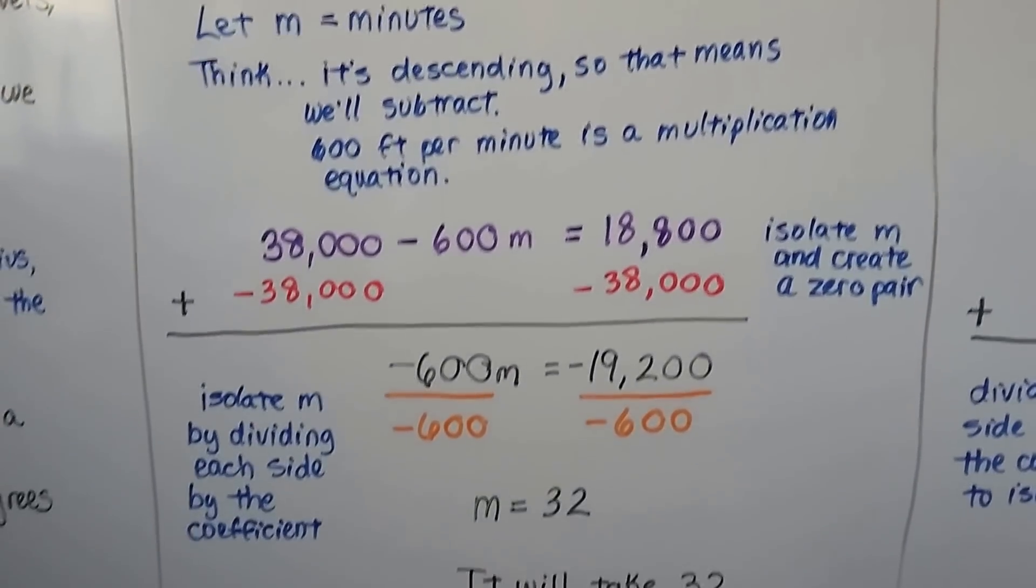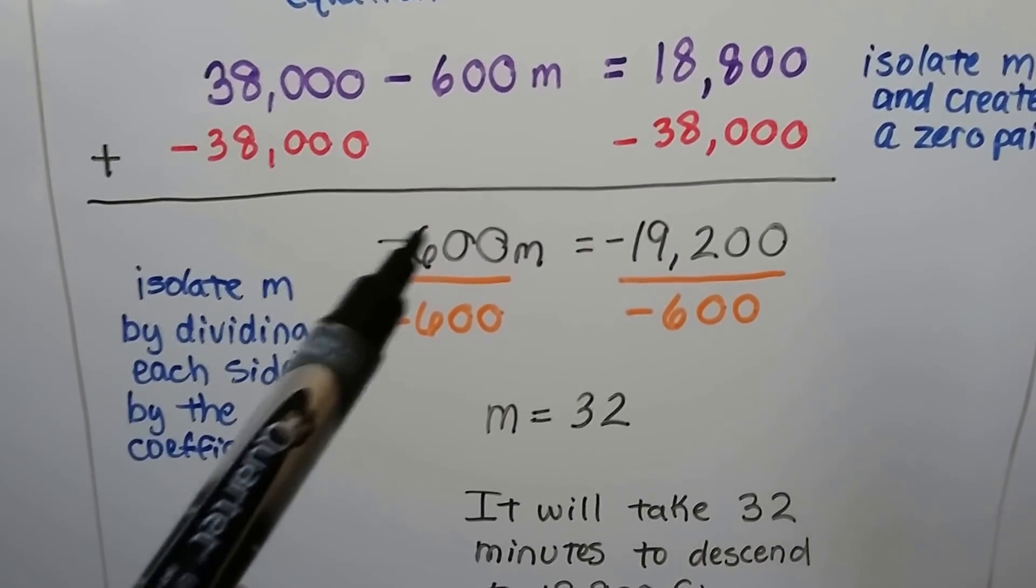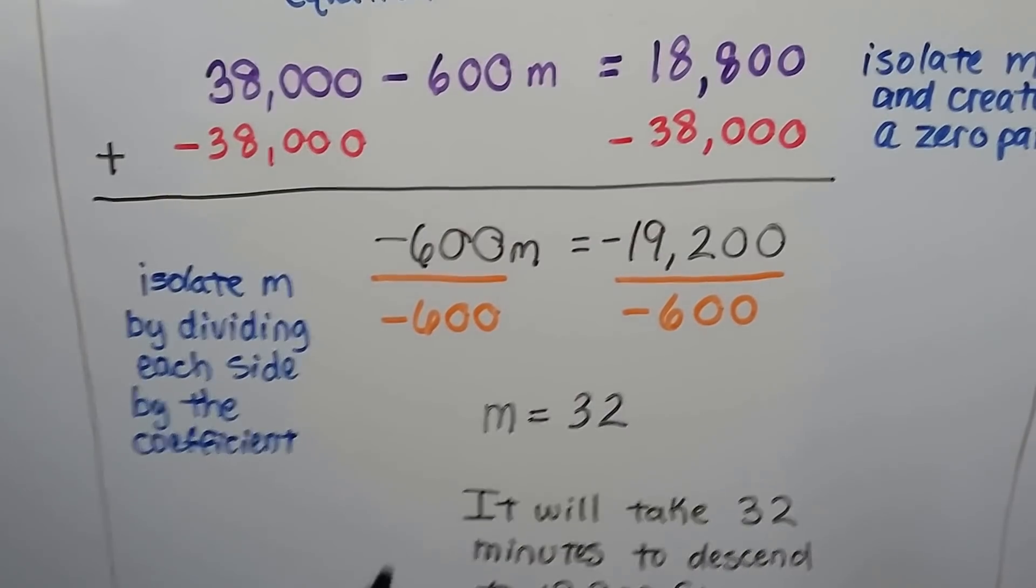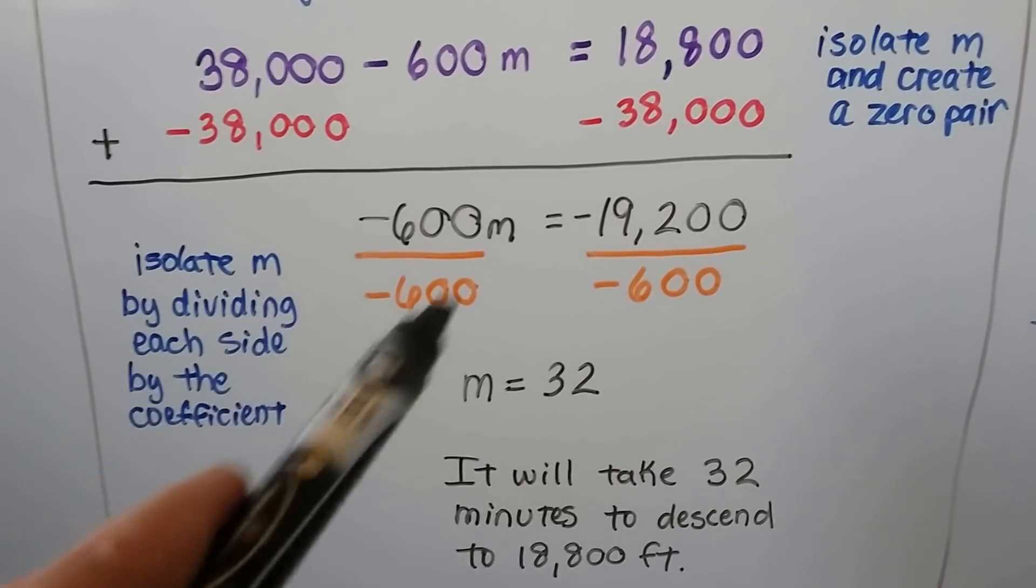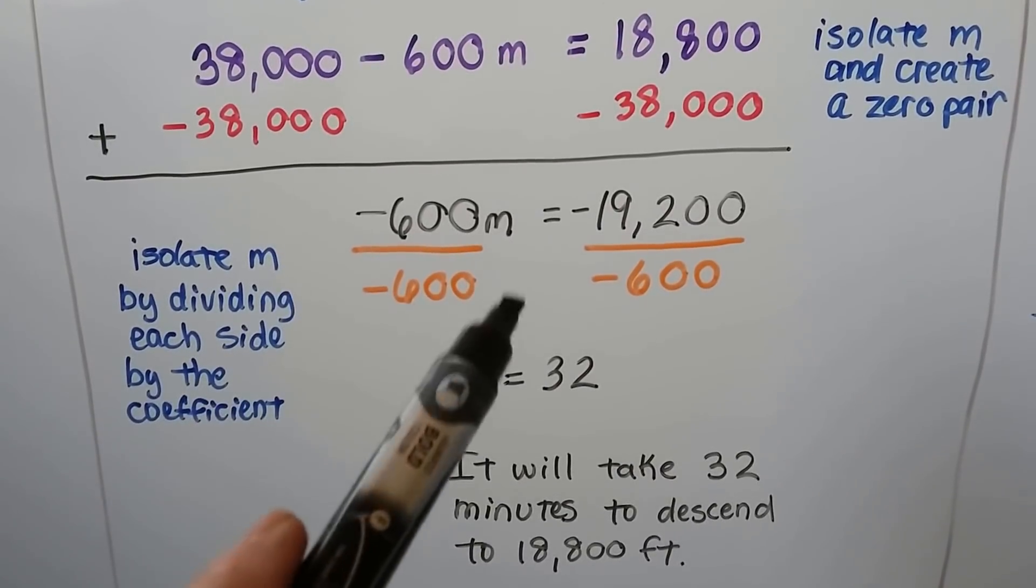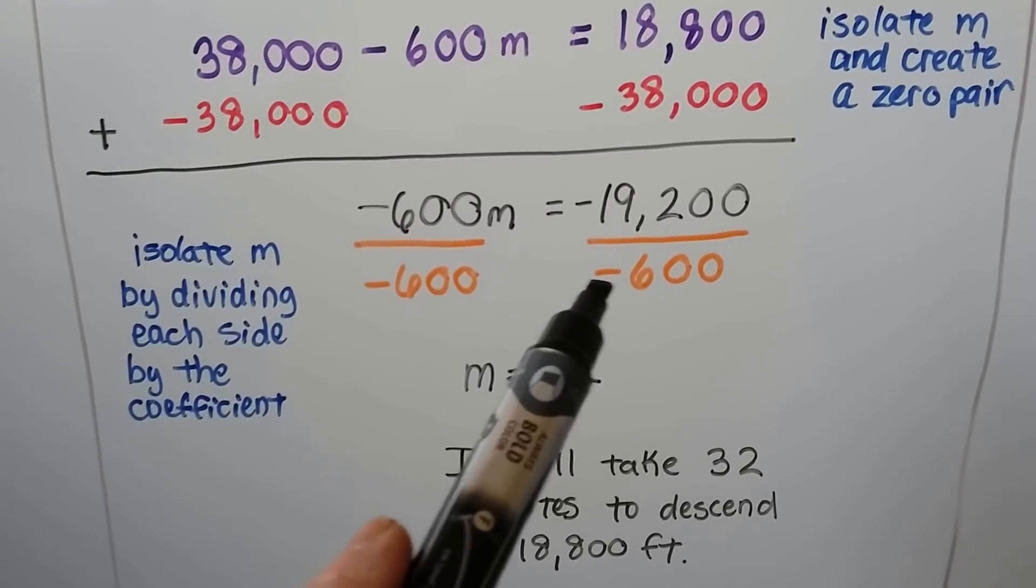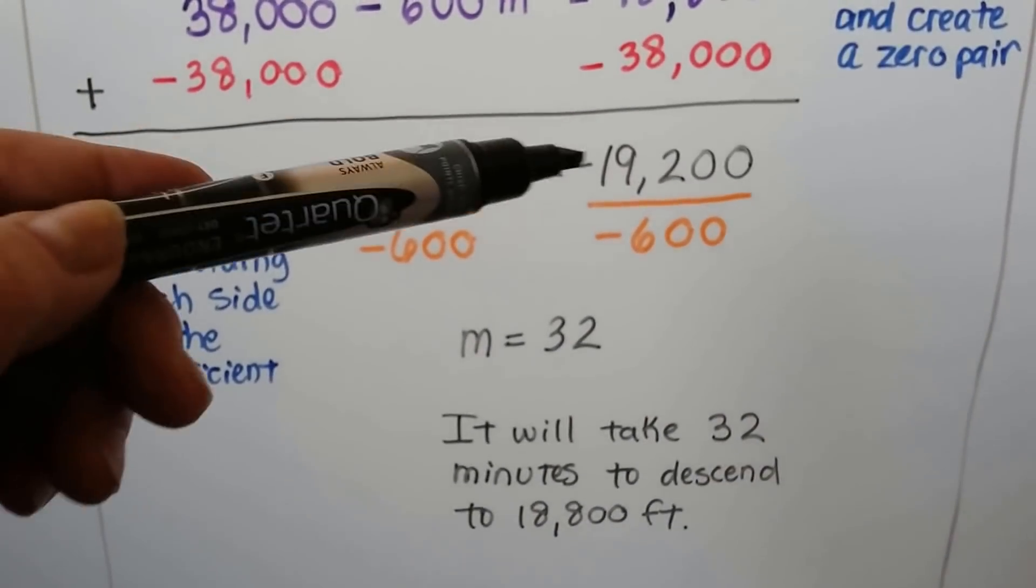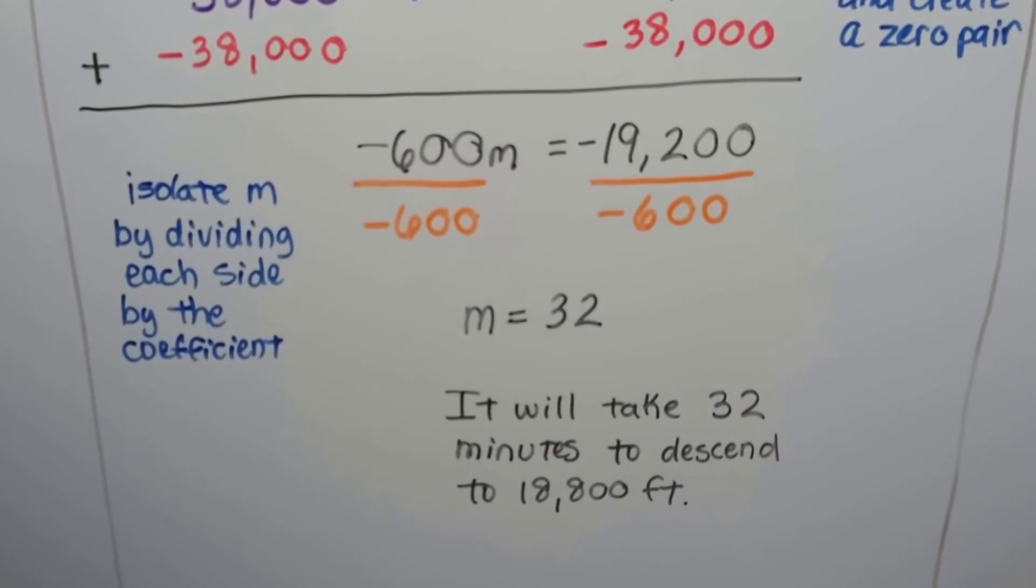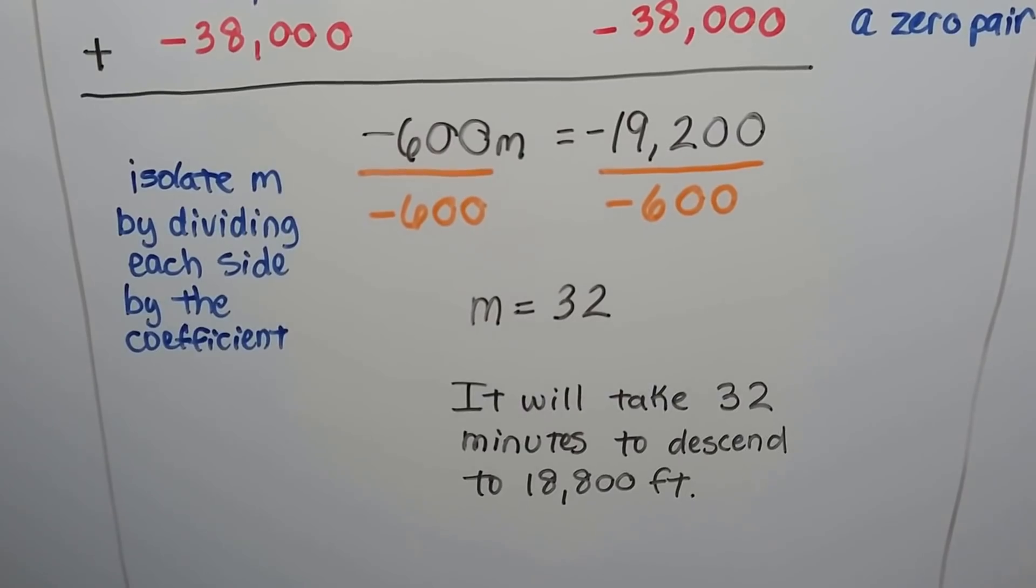We can isolate this m further by dividing each side by this coefficient, negative 600. We divide both sides by negative 600. Same numerator and denominator, so we get a 1. When we divide negative 19,200 by a negative 600, we get a positive 32. Negative and negative makes a positive. It's going to take 32 minutes to descend to 18,800 feet.